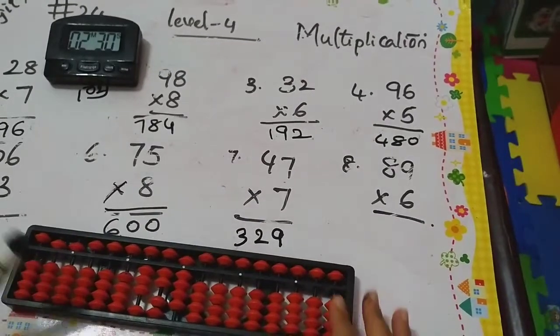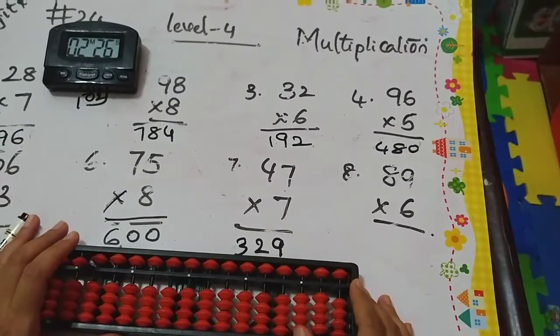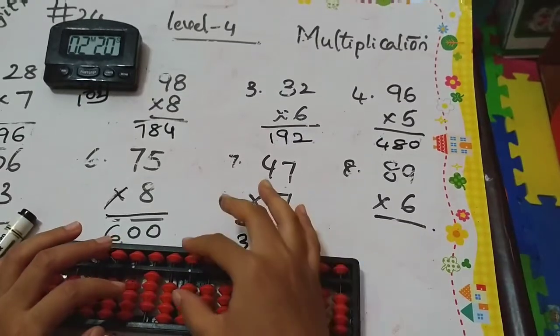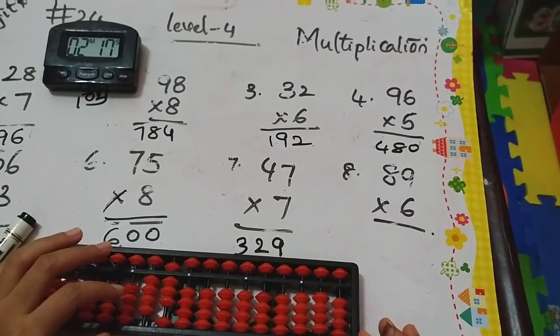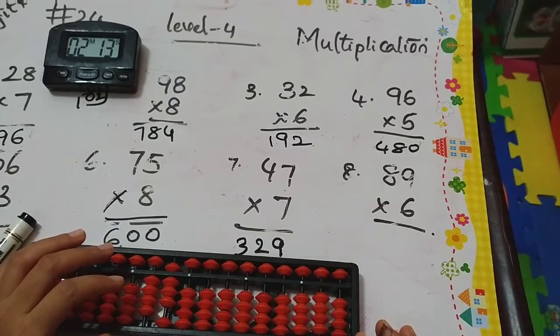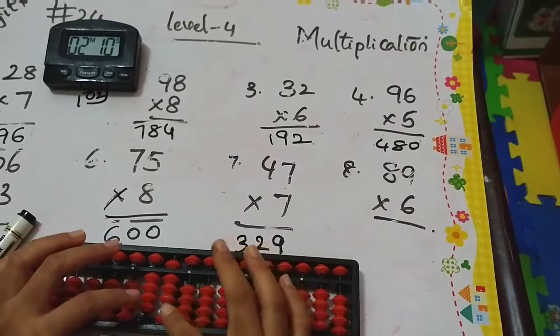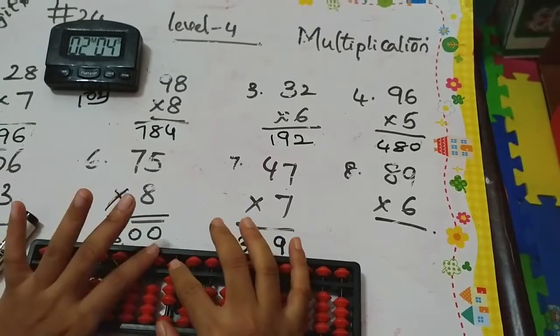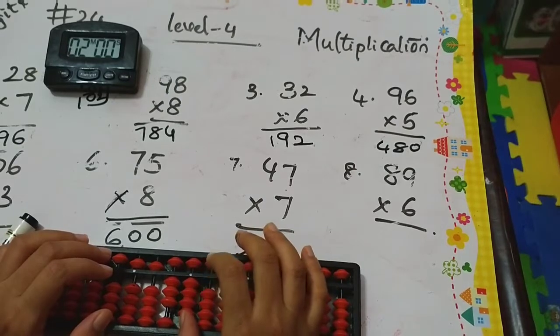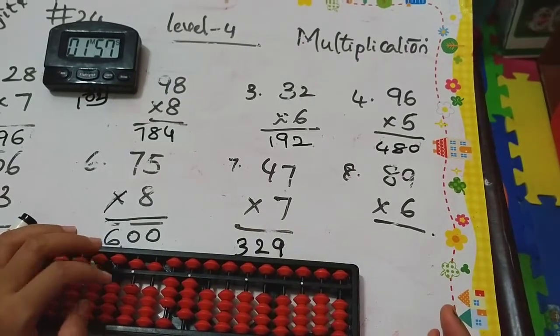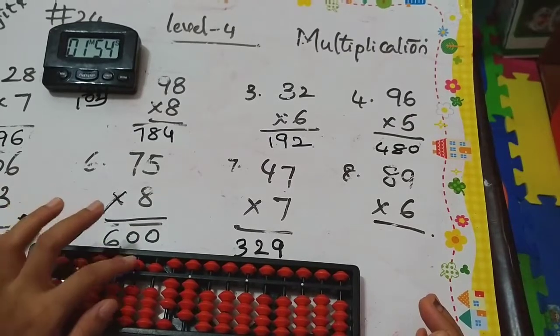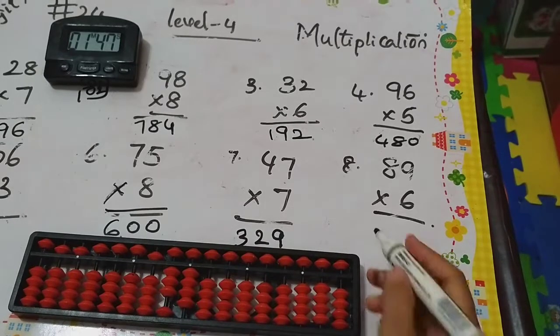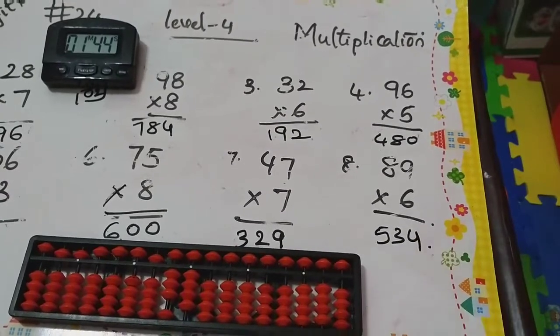Next: 89 times 6. 6 eights are 48, so 4 and then 8—that's 48. Then 6 nines are 54. So how to add 5 here? Plus 10 minus 5, and then 54. The answer is 534.